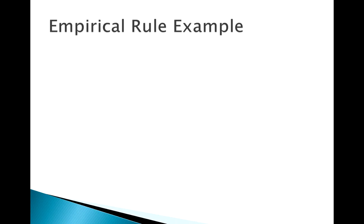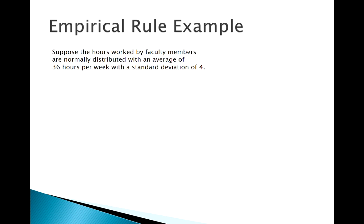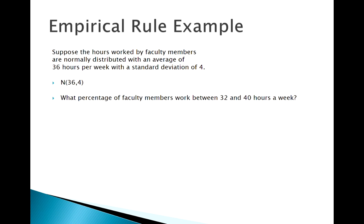Welcome back. We're going to start looking at some examples of applying these ideas to the normal distribution. The first place we usually want to start is the empirical rule. Say we have a normal distribution where the mean is 36 and the standard deviation is 4 — these are faculty members' working hours. So what if we wanted to answer the question: what percentage of faculty members work...